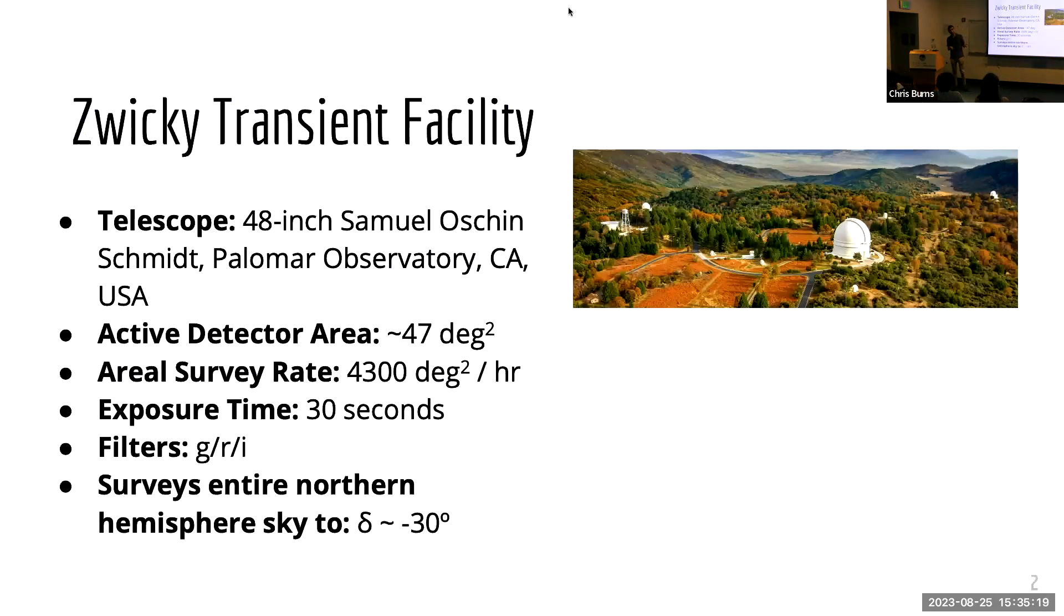So let's jump right into it. Zwicky Transient Facility is operated out of the 48-inch Samuel Oschin Smith Telescope from Palomar Observatory in San Diego County. It has a pretty wide field of view, so it's able to quickly scan the entire northern hemisphere of the sky down to a declination of negative 30 degrees, making it an ideal instrument for performing large survey science within time domain astronomy.